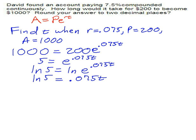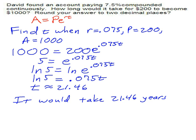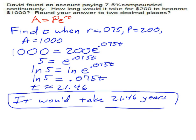The next step to do is to divide both sides by 0.075, and we end up getting t is approximately 21.46. So the final answer to this problem is that it would take about 21.46 years, and that is our final answer.